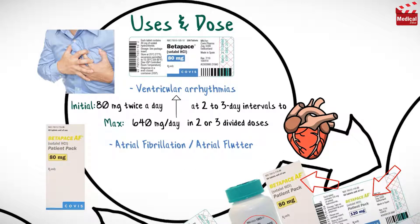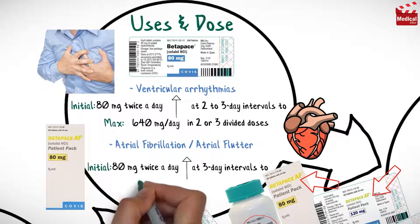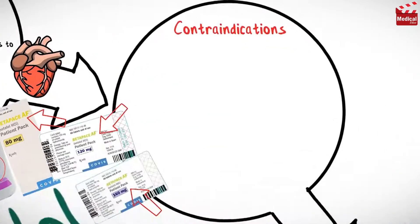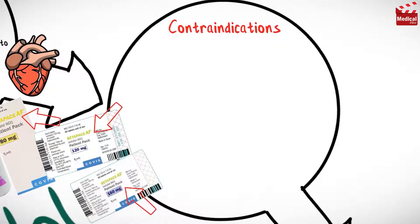For atrial fibrillation or flutter, the usual initial dose of Betapace AF is also 80 mg twice a day, increasing at 3-day intervals to a maximum dose of 160 mg twice a day.